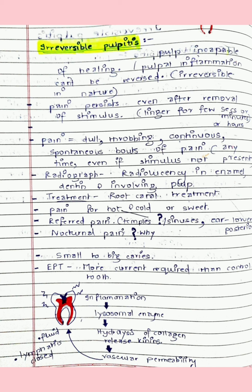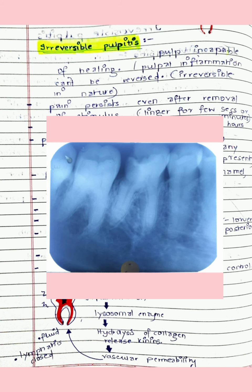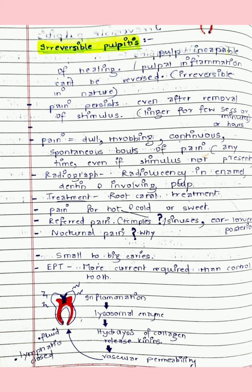In irreversible pulpitis, there can be spontaneous bouts of pain even without a stimulus. Radiograph will show radiolucency involving enamel, dentine, and pulp. Patients may give a history of referred pain — to the temples and sinuses when maxillary posteriors are involved, and to the ear when lower posteriors are involved. The treatment is root canal therapy. Nocturnal pain is present, there may be large caries, and more current is required than the control tooth on EPT.